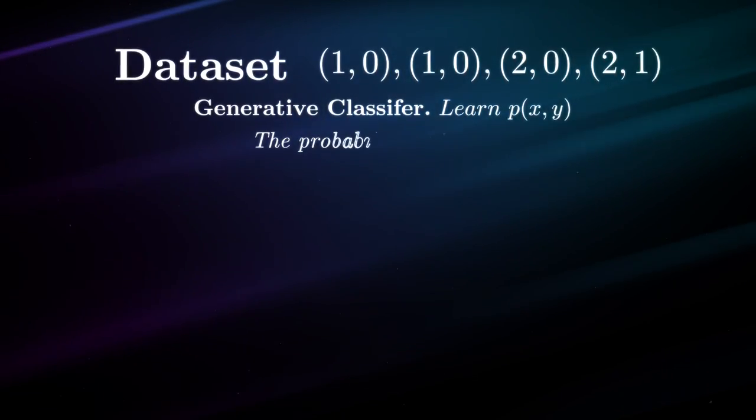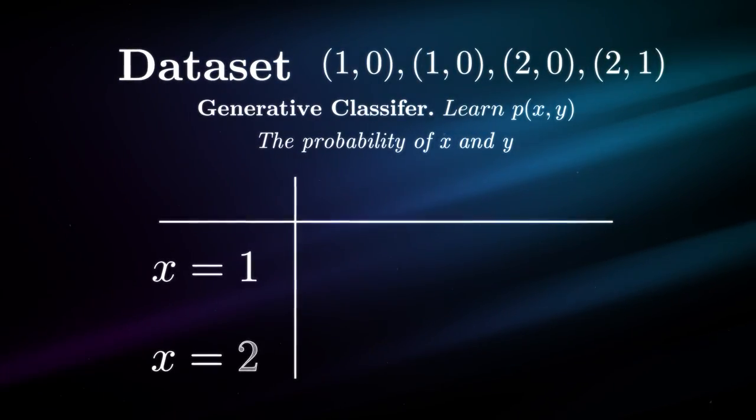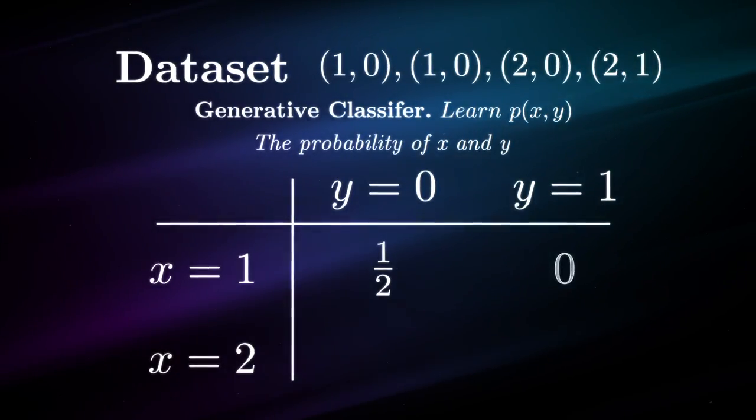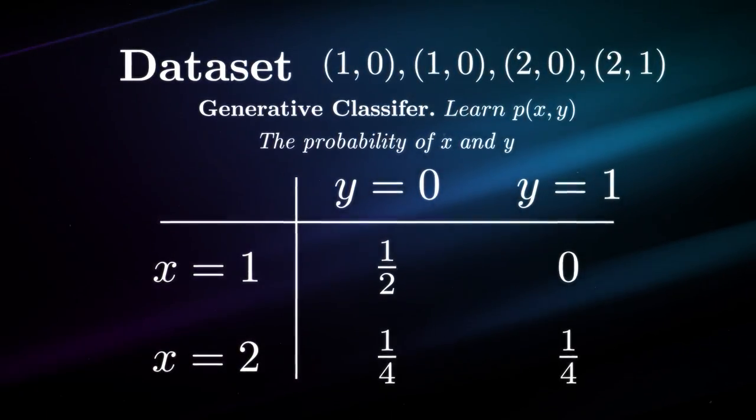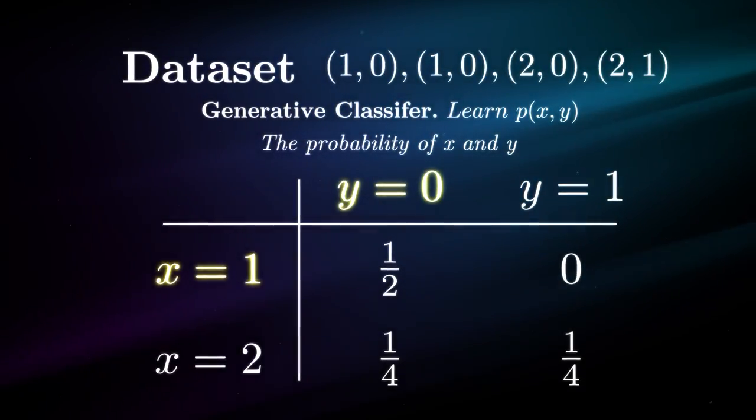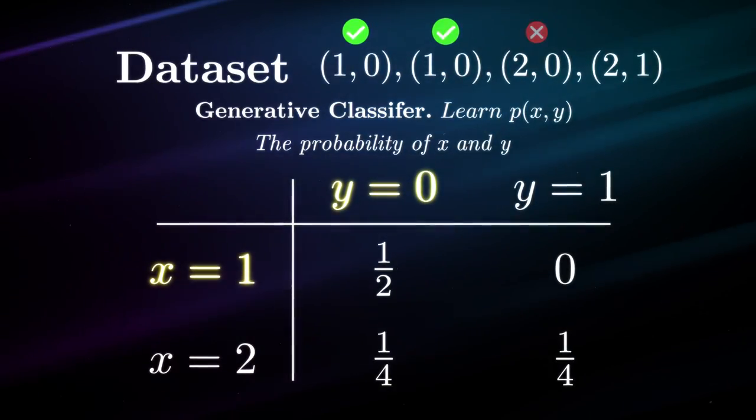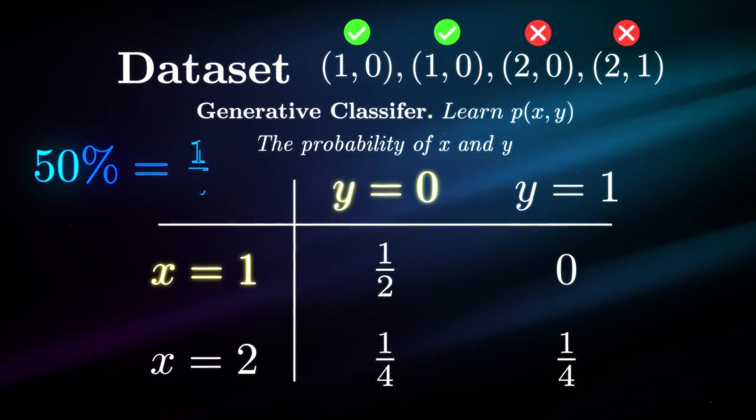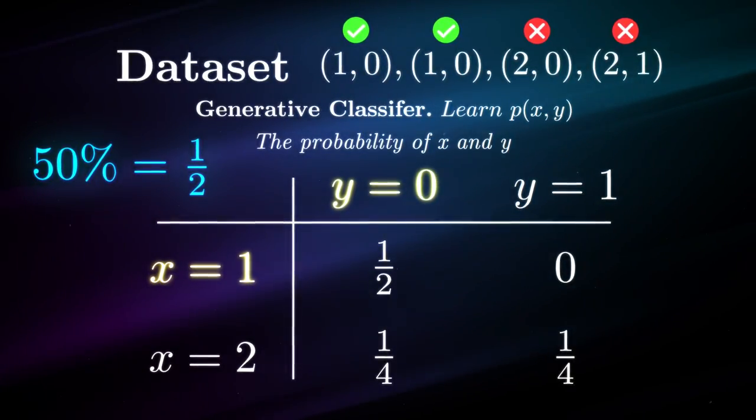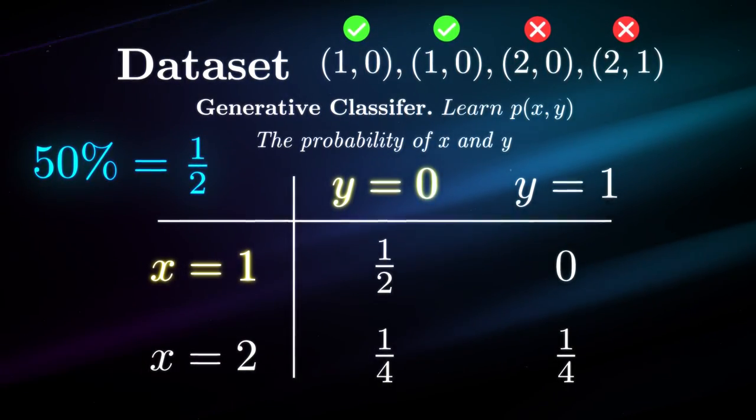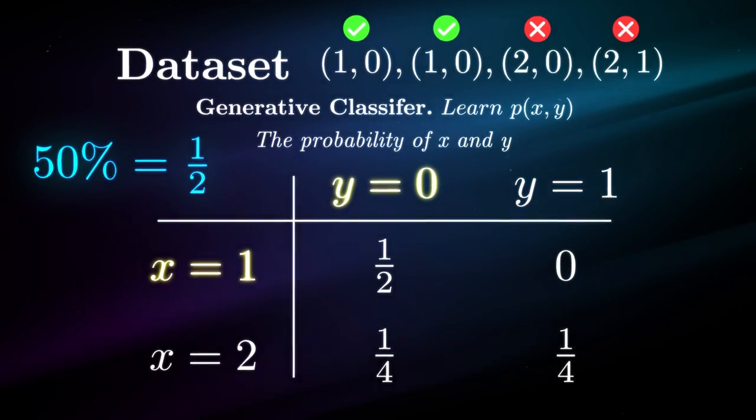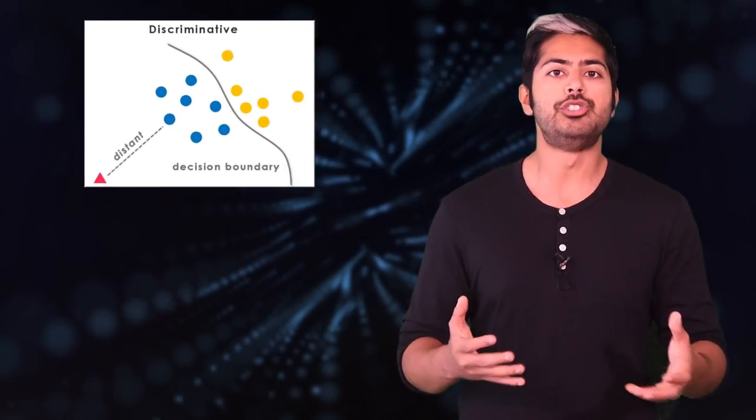Now a generative model is one that will instead learn the joint probability distribution of a data set. That is the probability of X and Y. And this will output different values than the previous probability distribution. If we take the case of X equals one and Y equals zero, we'll find that these both occur together twice out of the whole data set. Thus the joint probability is 50%.